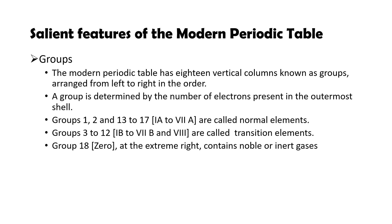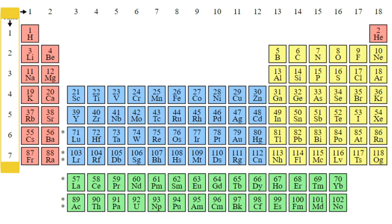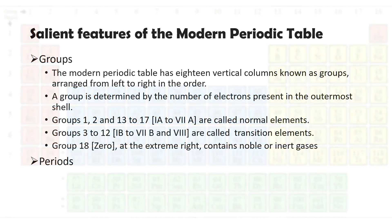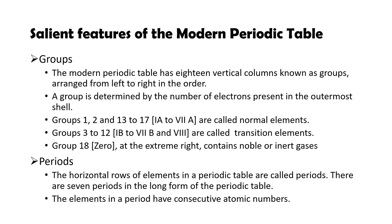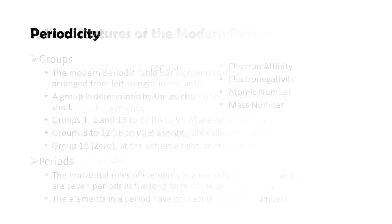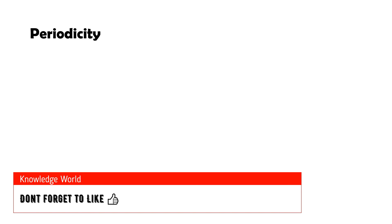The horizontal rows of elements in the periodic table are called periods. There are seven periods in the long form of the periodic table. The first period consists of two elements and is called the shortest period. The second and third periods contain eight elements each and are called short periods. The fourth and fifth periods contain 18 elements each and are called long periods. The sixth period contains 32 elements and is the longest period. The seventh period is yet incomplete. Elements in a period have consecutive atomic numbers.